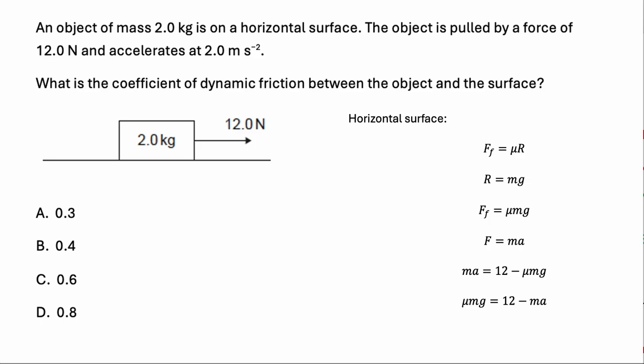We can have mu mg is equal to 12 minus mA, and then substitute the numbers in. We've got mu is equal to 12 minus mA, divided by mg. 12 take away 4, divided by 2 times 10, which is 20, which is going to give us 0.4.